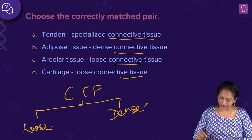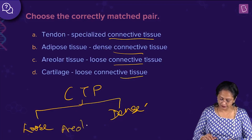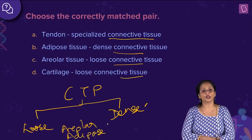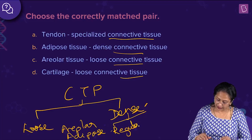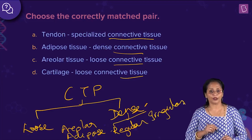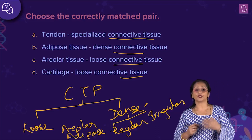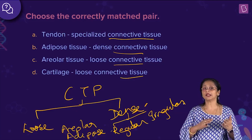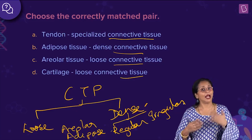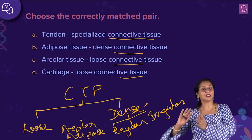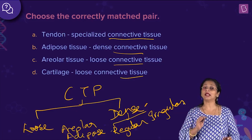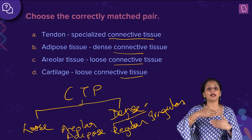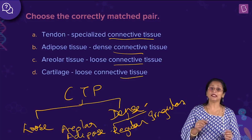Under loose connective tissue, there are two types: areola and adipose connective tissue. Dense connective tissue can be dense regular and dense irregular. Under specialized connective tissue, you have fluid connective tissue (blood), bone, and cartilage. For dense connective tissue, regular and irregular classification is based on how the fibers are arranged — whether arranged parallelly in a regular manner or not. Tendons and ligaments fall under dense connective tissue.